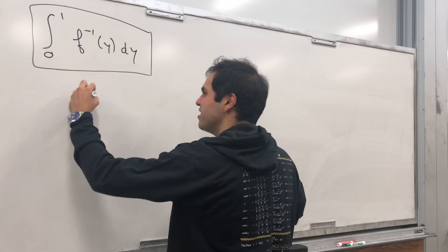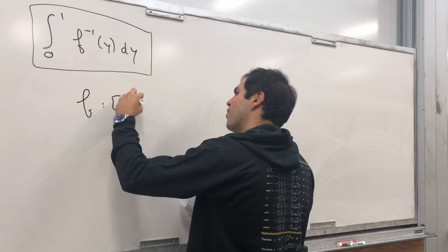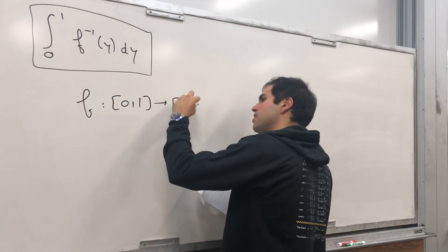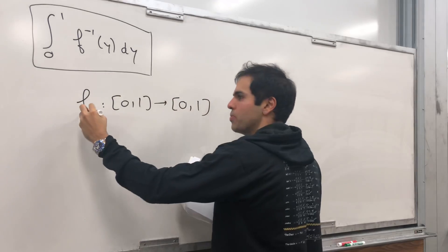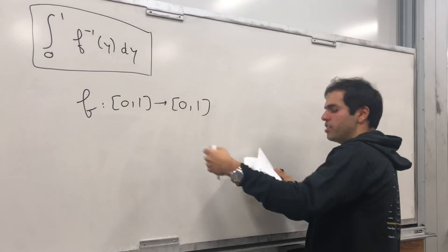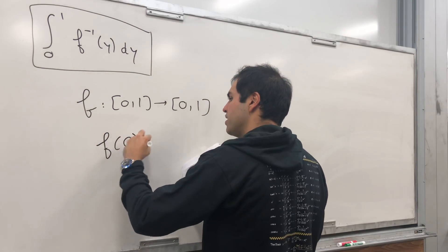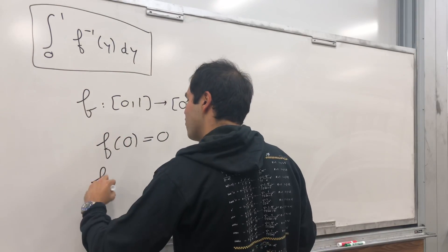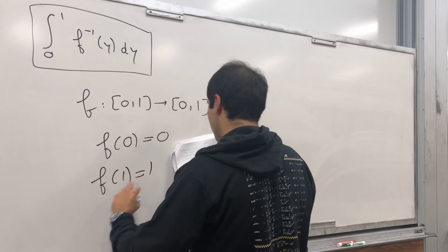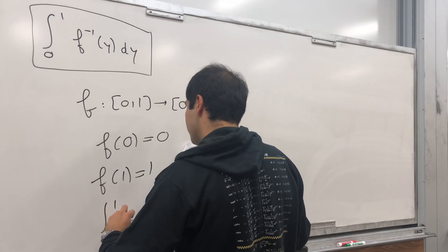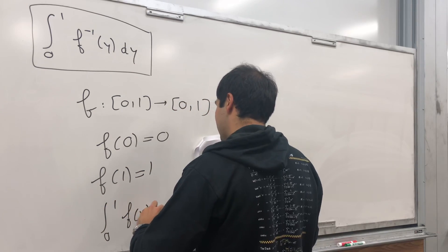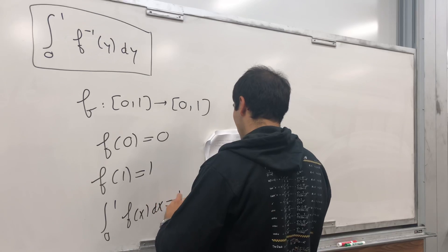The question is, suppose your function from [0,1] to [0,1], and by the way nothing special about those intervals, that is continuous. And moreover, f(0) equals 0, f(1) equals 1, integral from 0 to 1 of f(x)dx is 1/3,